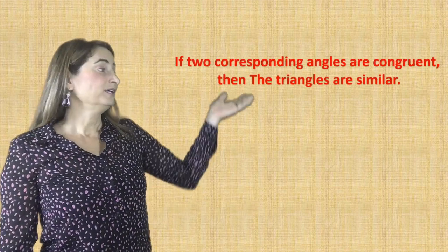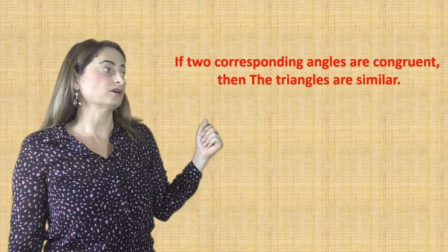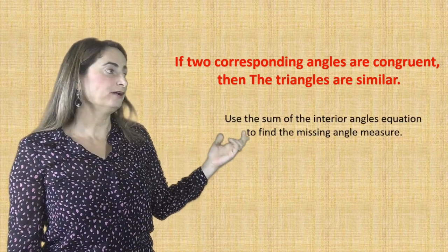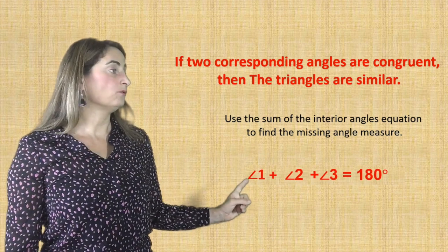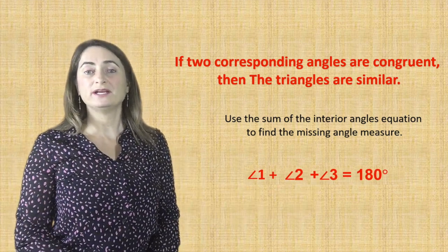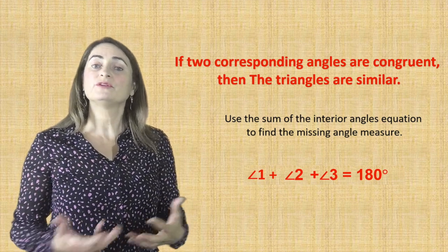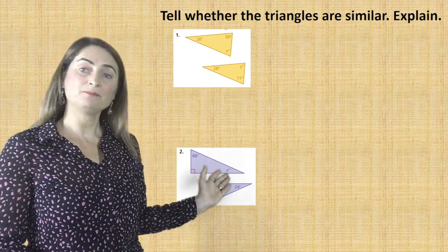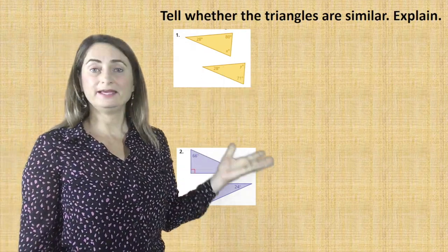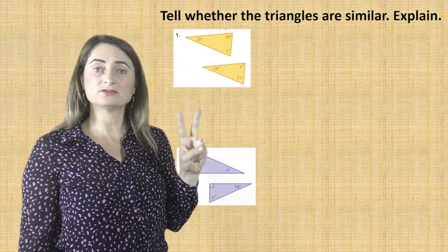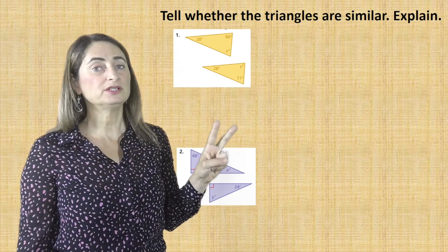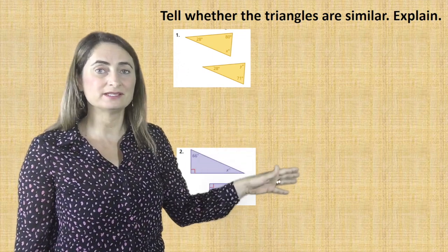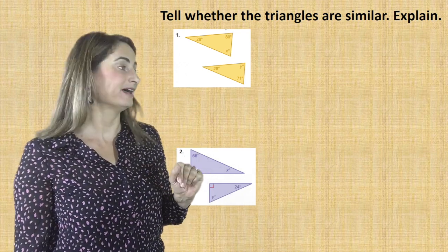For today's lesson, if we can prove that two corresponding angles are congruent, then the triangles are similar. To find the missing angle measure, use the equation: angle 1 plus angle 2 plus angle 3 equals 180. This way you can prove if the two triangles are similar or not. Remember, all you have to prove is two pairs of angles are congruent — you don't need to prove three angles are congruent. Why? Because the third one has to be the same for them to equal 180, and you'll find that out yourself.